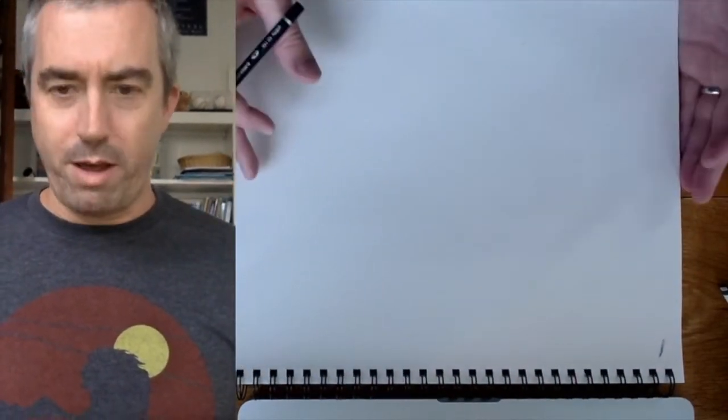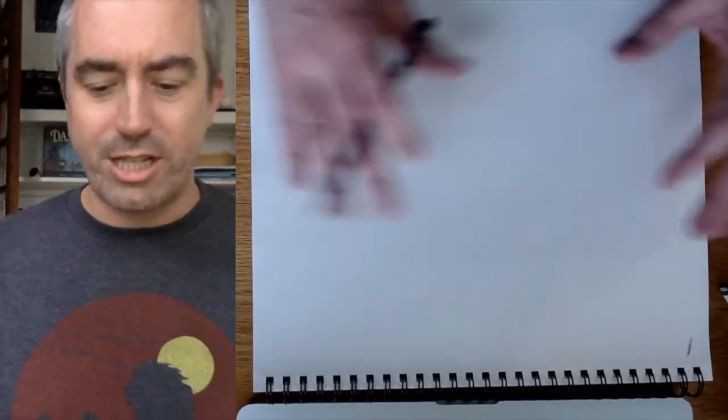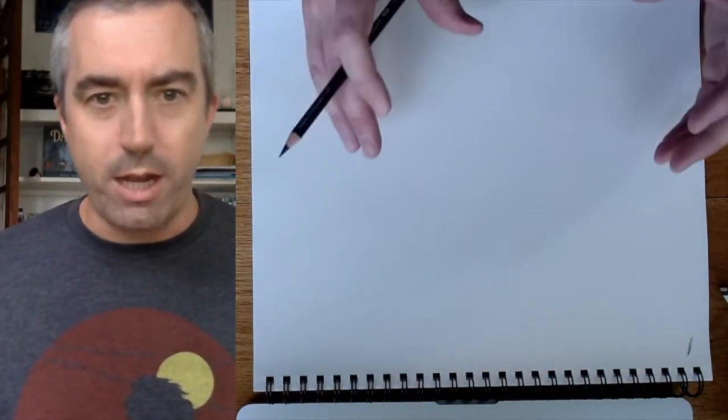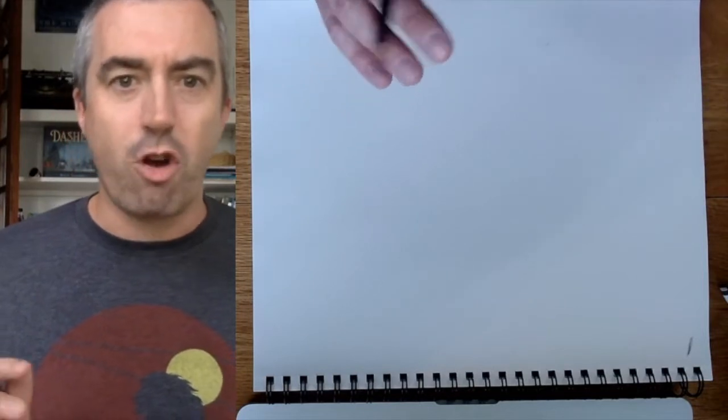So as I'm starting with this blank white piece of paper, I need to just get started with something on the page. So I'm going to start with, for the shape of the body of a T-Rex, I'm going to draw an oval.